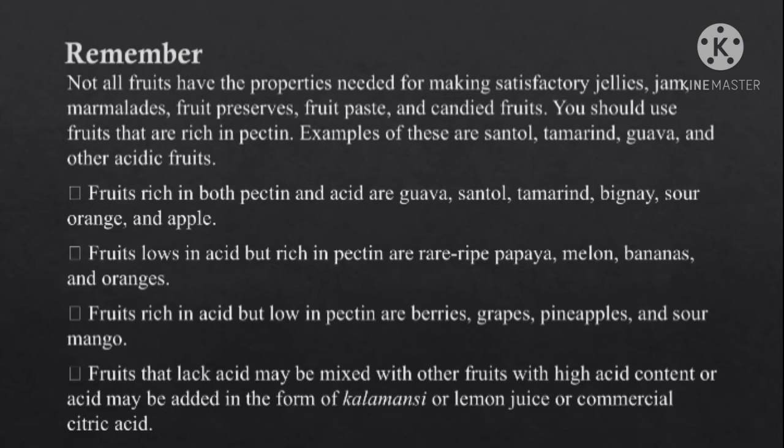Fruits low in acid but rich in pectin are ripe papaya, melon, bananas, and oranges. Fruits rich in acid but low in pectin are berries, grapes, pineapples, and sour mango. Fruits that lack acid may be mixed with other fruits with high acid content, or acid may be added in the form of calamansi or lemon juice or commercial acid.